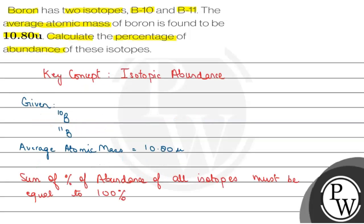So we have calculated the percentage of abundance of both isotopes: B-10, which is 20 percent, and B-11 isotope, which has 80 percent abundance. So I hope you understood it well. Thank you and best of luck.